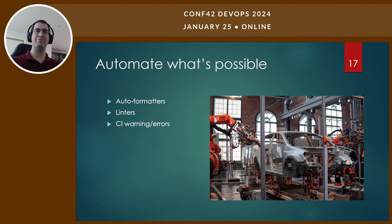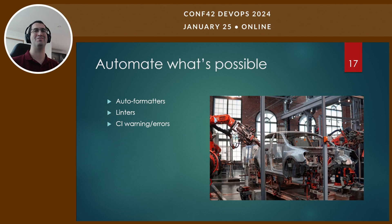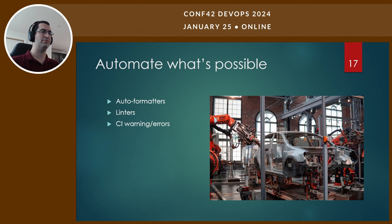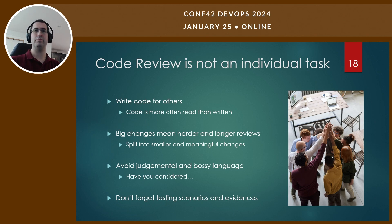Another very important thing: automate anything that's possible to automate. We have auto-formatters, linters for almost any language used in modern software engineering, CI warnings and errors. I remember a project years ago where we sometimes had to send back pull requests because an engineer used tabs instead of spaces. You can handle that without a human reviewer checking what character was used — that's really not a good use of engineers' time.